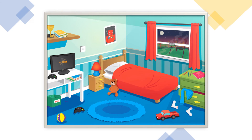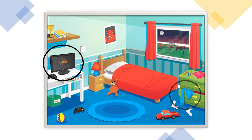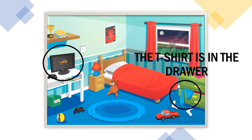Great. Well now let's practice. This is a bedroom and there are lots of objects. Where is the computer? The computer is on the table. Very good. Now where is the light blue t-shirt? The t-shirt is in the drawer.